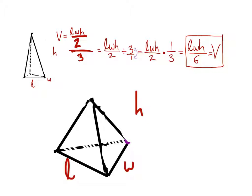Where they're going to show the height in the homework and other places is going to be right in the middle of that pyramid. They'll show it right in the middle — it'll be from the very point of the top, then it comes straight down, and it will be dotted. You'll also see a little box there showing that it's a 90-degree angle, just like it would have been for that rectangular prism. The height is referring to this middle line here.